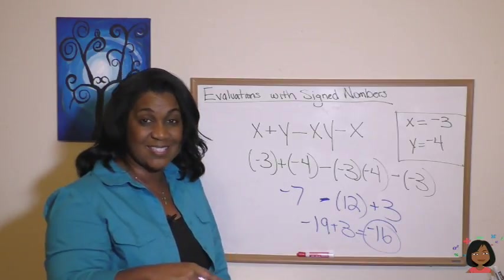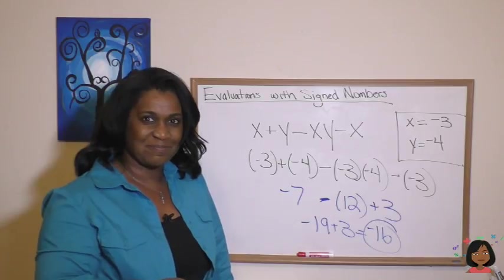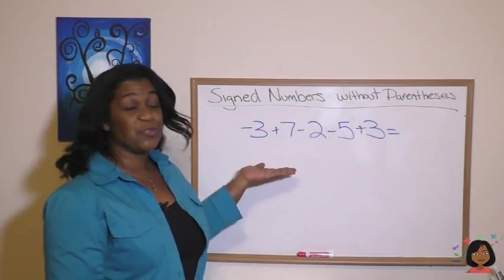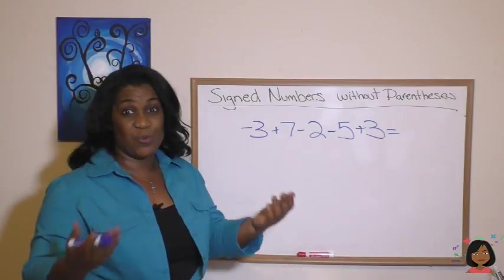Now we're going to move on to part two of this lesson where we're going to take away the parentheses. Let's see how we do. Let's take a look at this example. So notice we have signed numbers and we do not have parentheses. So where do we start?